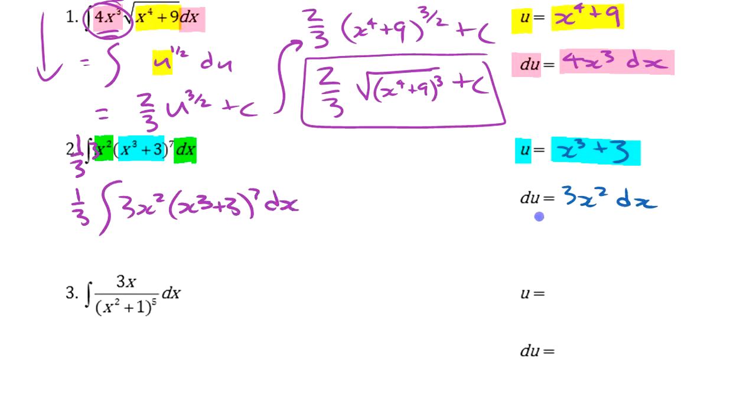Or, if you don't like doing that, what you can do is you can change this around. You can change this around and say, if this is true, then what's also true is x squared dx is equal to 1 3rd du. So either one of those ways is going to work for you here. I'm going to stick with the first way that I did it and do that.